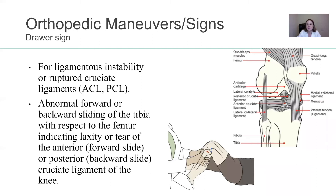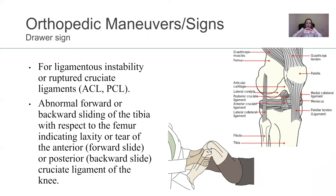So orthopedic maneuvers and signs — let's start with the drawer sign. Don't get too frustrated; let's think this through. Think of the name drawer sign. What is a drawer? You put your clothes, your underwear, your socks in a drawer. You open it like a drawer and you close it. That's exactly the movement you're doing here on the knee — you are pulling the leg out, creating that drawer-like motion and closing the drawer by pushing the leg in. That is your drawer sign.